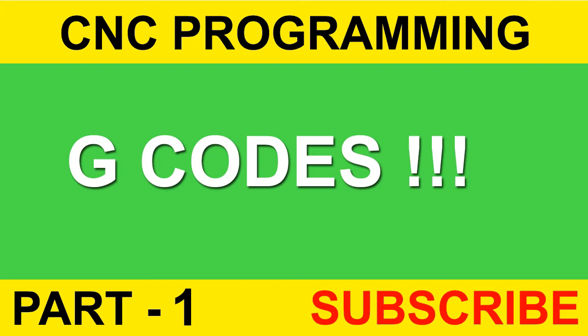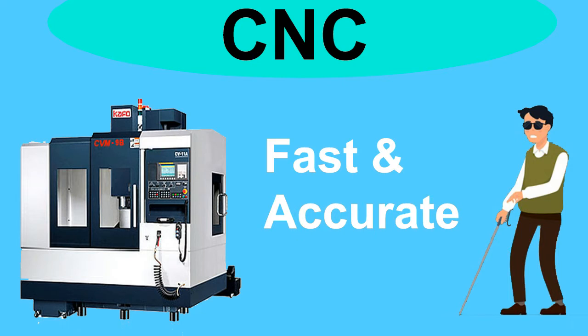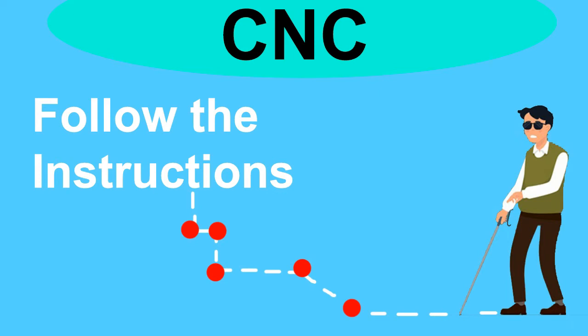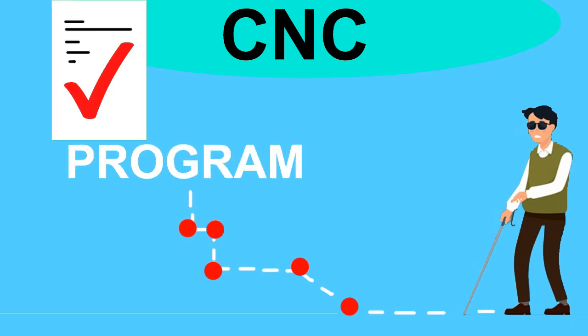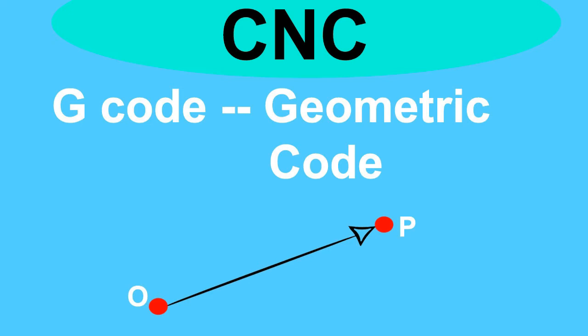In this video we are going to cover G-codes, one by one. CNC is a blind machine but very accurate and fast because it will follow whatever the human operator commands. These instructions and commands to the CNC are given by the CNC program, which consists of various codes like G-code, M-code, and other alphanumeric values.